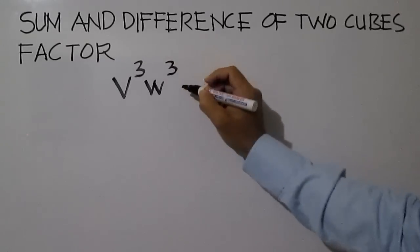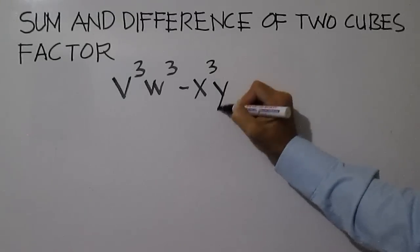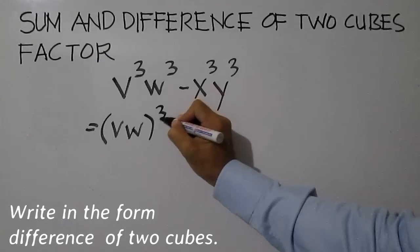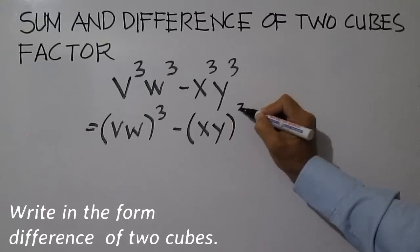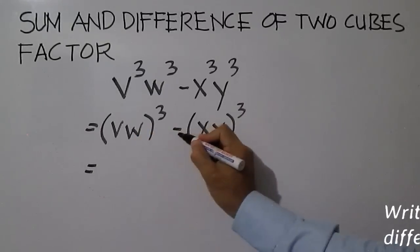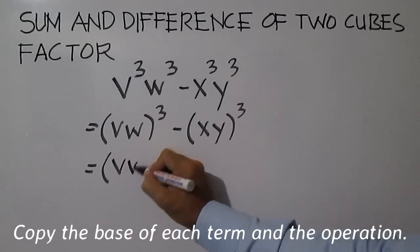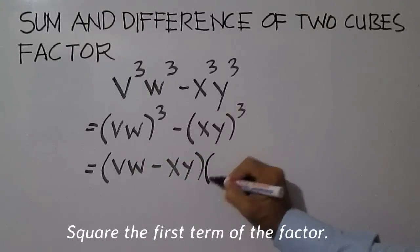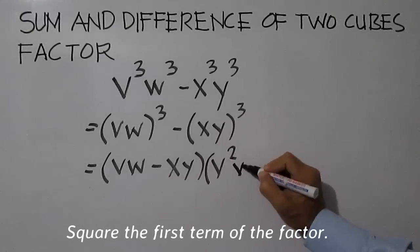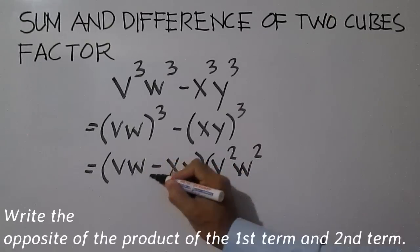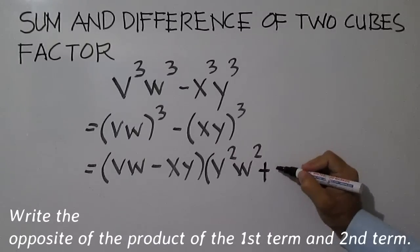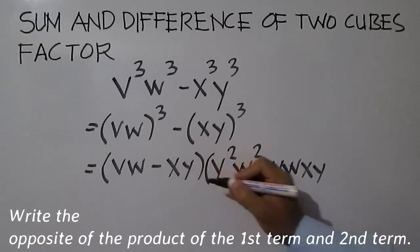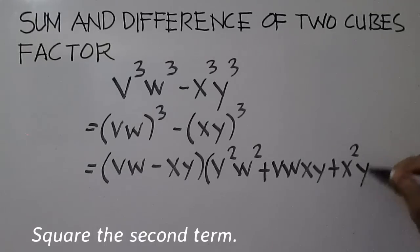We have a difference of two cubes. Write in the form difference of two cubes, then copy the base including the operation: VW minus XY. Using this factor, square the first term: VW times VW is V squared W squared. Multiply the first term and the second term, then write the opposite: VW times XY. Then square the second term: negative XY times negative XY is X squared Y squared.